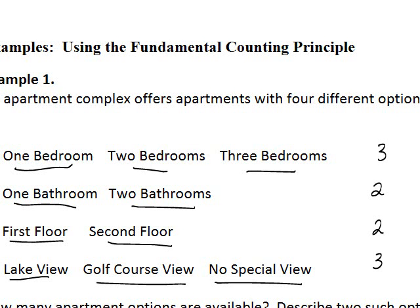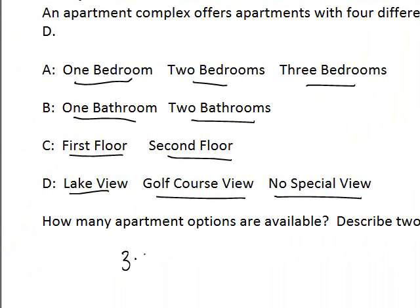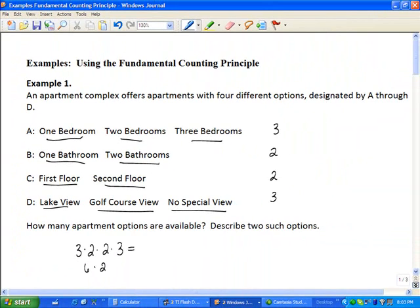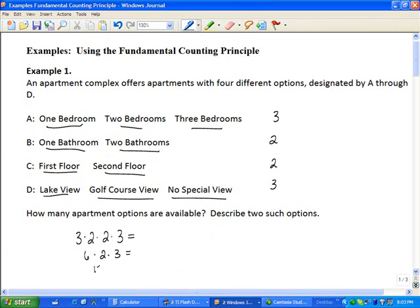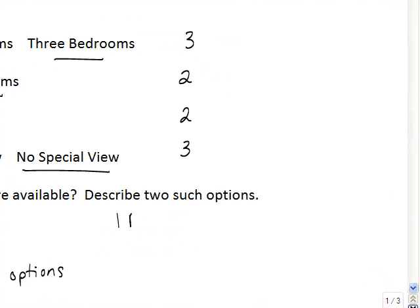According to the fundamental counting principle, how many apartment options are available? We find this by multiplying: three times two times two times three. Three times two is six, times two is twelve, times three is thirty-six. There are 36 different options available.